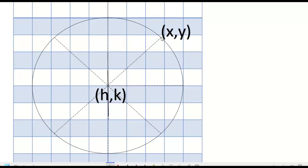We can construct a figure by extending a segment from point (x,y) downward and from point (h,k) to the right. The figure formed is a right triangle, where the radius is the hypotenuse.